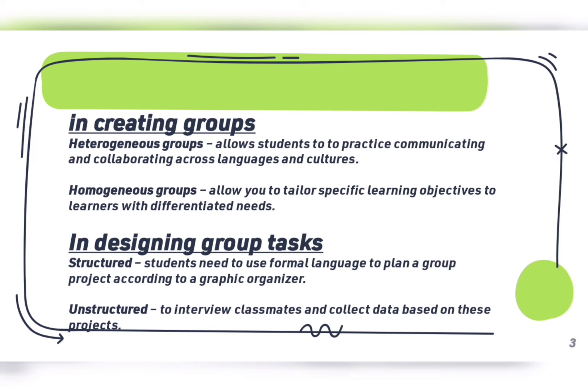On the other hand, homogeneous groups allow you to tailor specific learning objectives to learners with differentiated needs. In this type of grouping, students who function at similar academic, social, and emotional levels are placed in the same cooperative learning group. For example, children with special needs are placed in one group while gifted and talented students are placed in another. Homogeneous grouping helps all students in the classroom stay on the same page as their classmates.